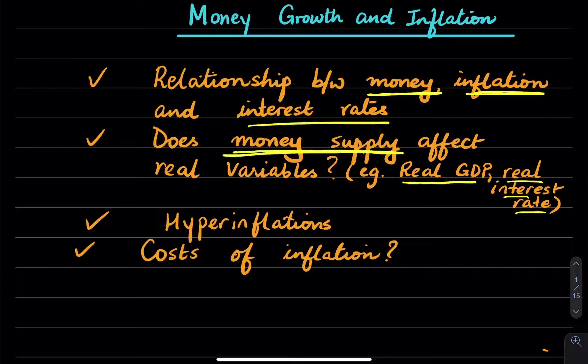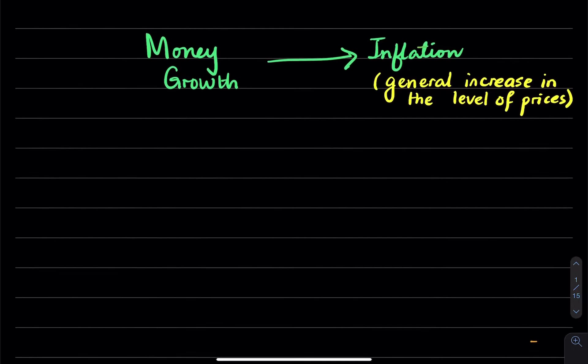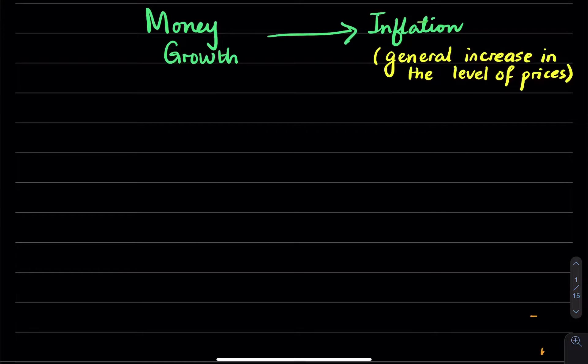We'll also be talking about hyperinflations, which are situations where the inflation rate is very high, exceeding 50% per month. And we'll end by talking about some of the real costs of inflation. So let's think about inflation - we all know that inflation is a general increase in the level of prices.